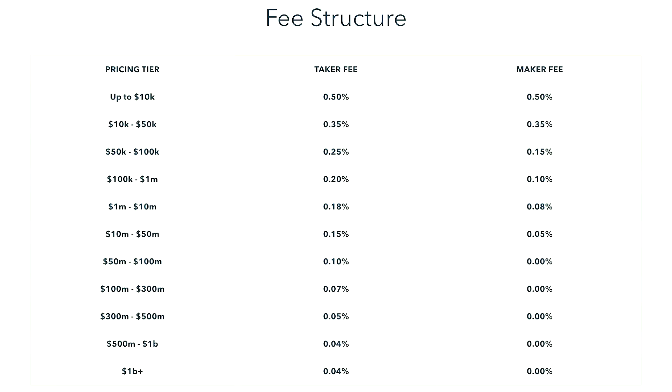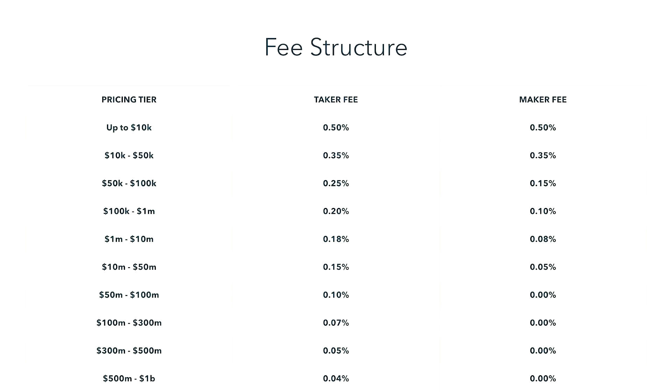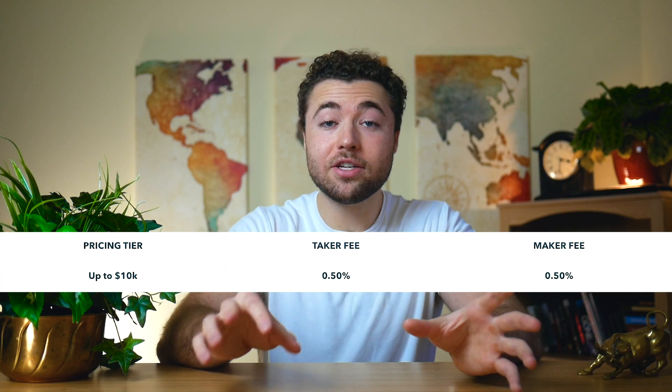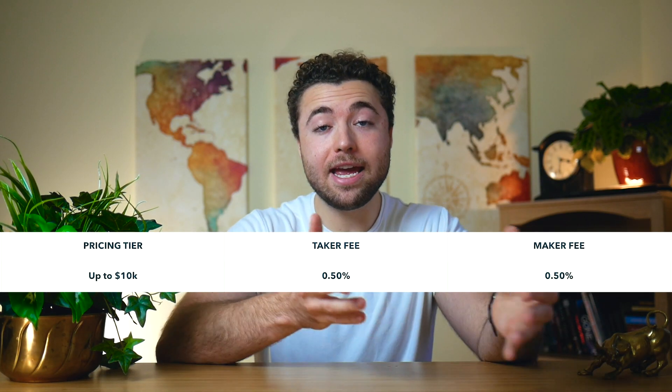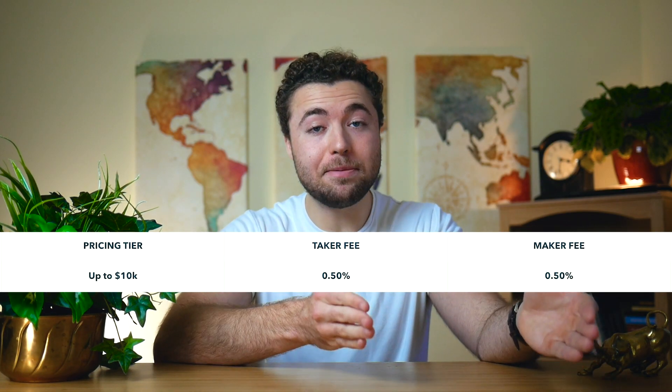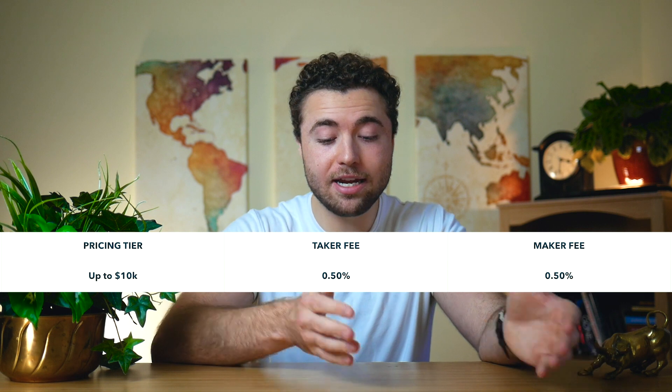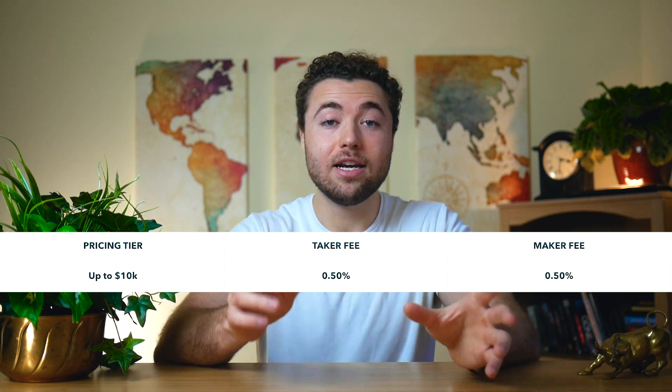By far, most people will fit into the first three pricing tiers. The first tier is that your trades over the last 30 days add up to a total less than $10,000. In this tier, you would pay a half a percent maker fee and a half percent taker fee.